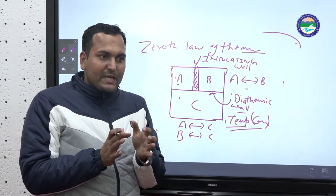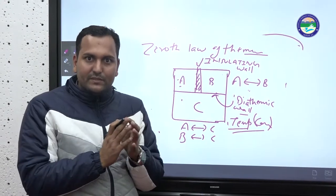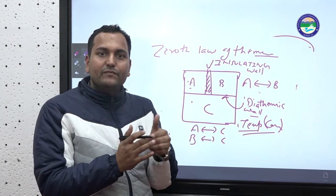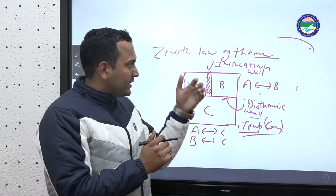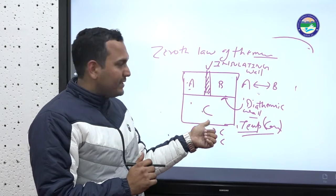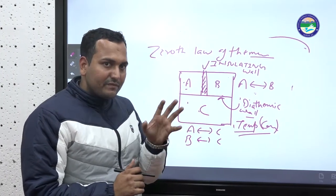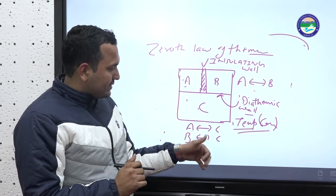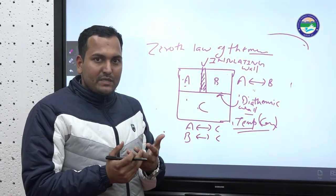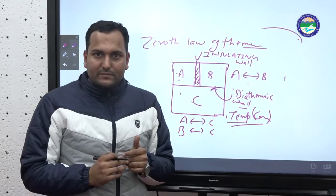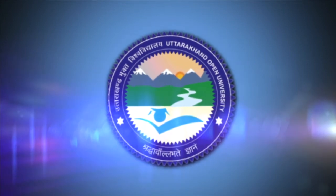So today we have discussed: first, thermodynamics — the branch of physics which deals with the flow and motion of heat, where thermo means heat and dynamics means motion. Then we discussed the zeroth law of thermodynamics — if A and C are in thermal equilibrium and B and C are in thermal equilibrium, then A and B are also in thermal equilibrium, even with an insulating wall between them. Finally, the concept of temperature: the quantity that is equal when two systems are in thermal equilibrium is called temperature. Thank you for today's lecture.